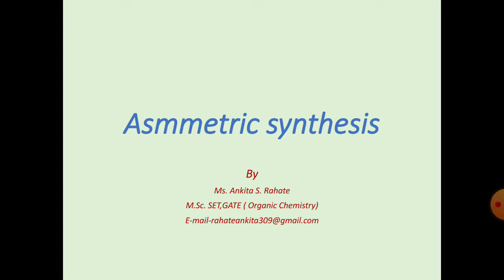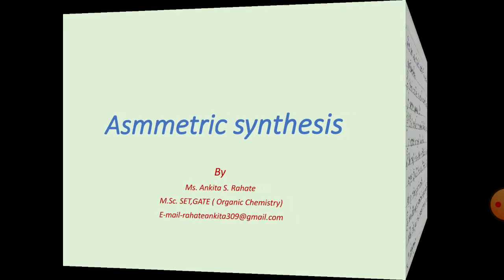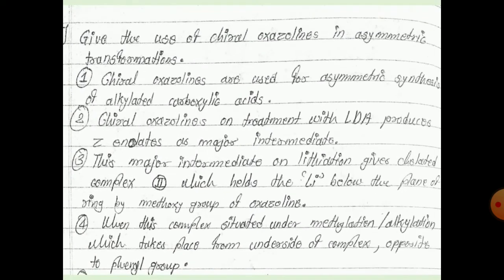MSc part 2, semester 4, paper 1: Theoretical Organic Chemistry 2, unit on asymmetric synthesis. The next question is: give the use of chiral oxazolines in asymmetric transformation.